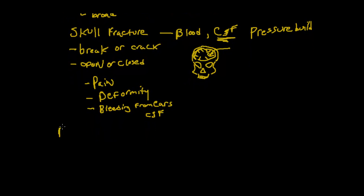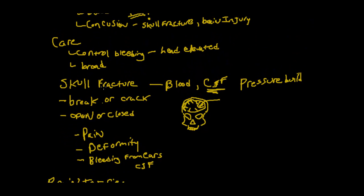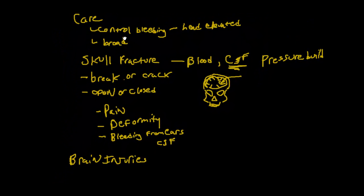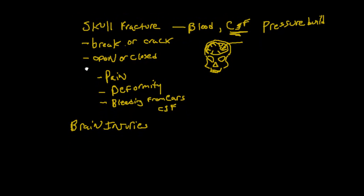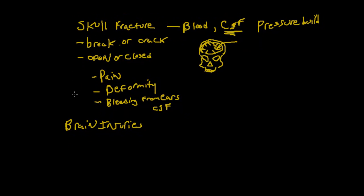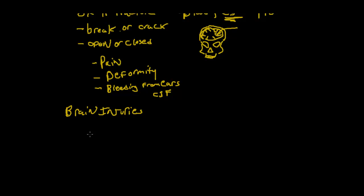So brain injuries. Could have all three of these. In fact, most likely you will. You could have a scalp wound along with skull fracture which leads to a brain injury. So these are not independent of one another. You could have all three. A lot of times brain injuries occur because of vehicle crashes. These are the most common, along with falls, especially in young children.